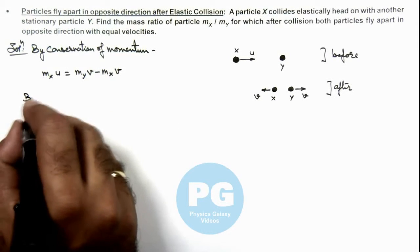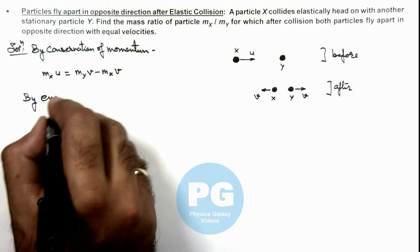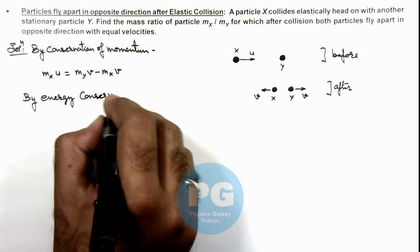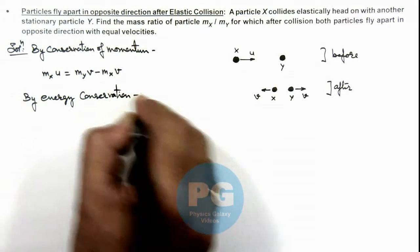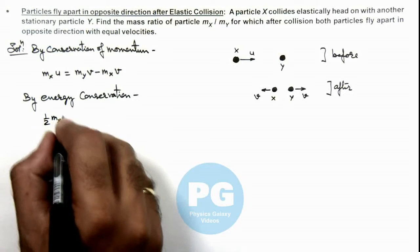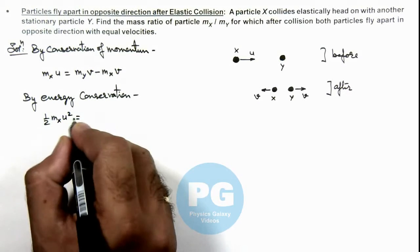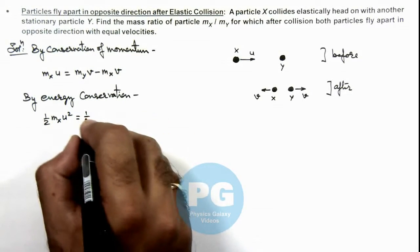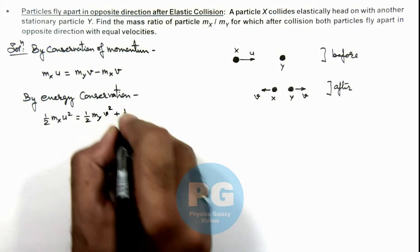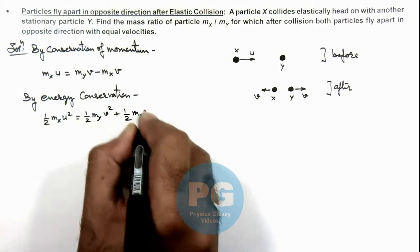And we can write by energy conservation, here initial kinetic energy is half mx u square, is equal to final kinetic energy is half my v square plus half mx v square.